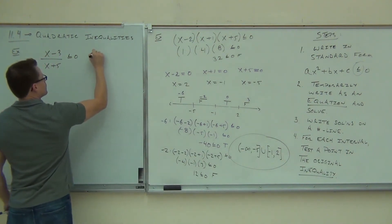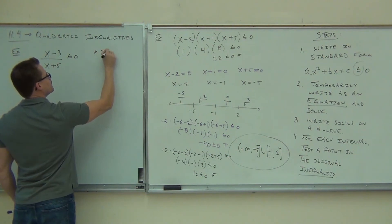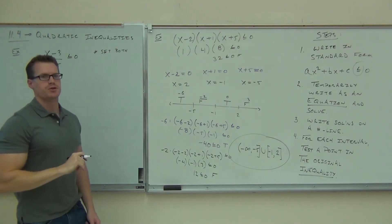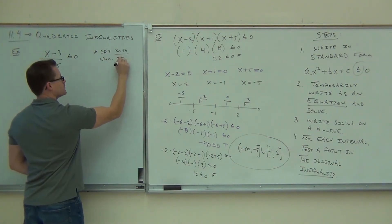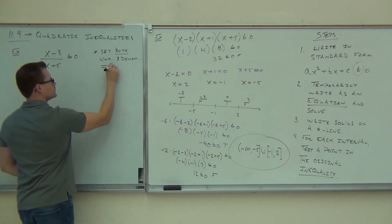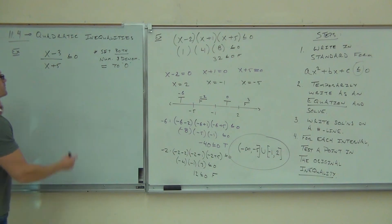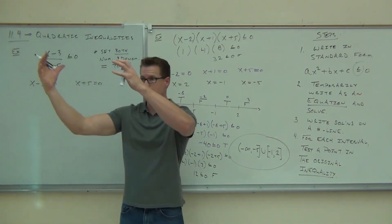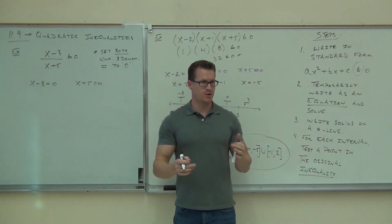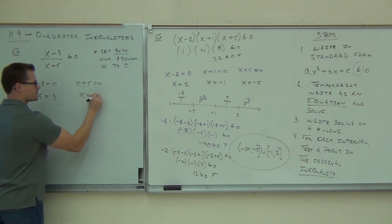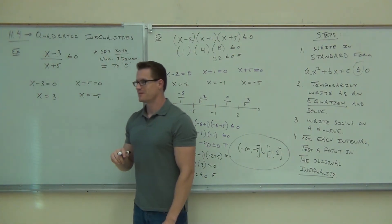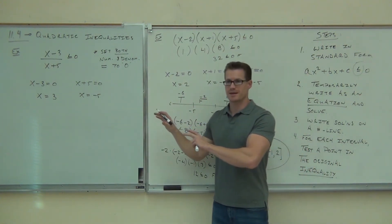Here's what you're going to do. You're going to set both the numerator and denominator equal to zero. What that means up here is we're going to get x minus 3 equals zero, and we're going to get x plus 5 equals zero. Did you notice how I'm just setting the top equal to zero, set the bottom equal to zero. Are you with me?